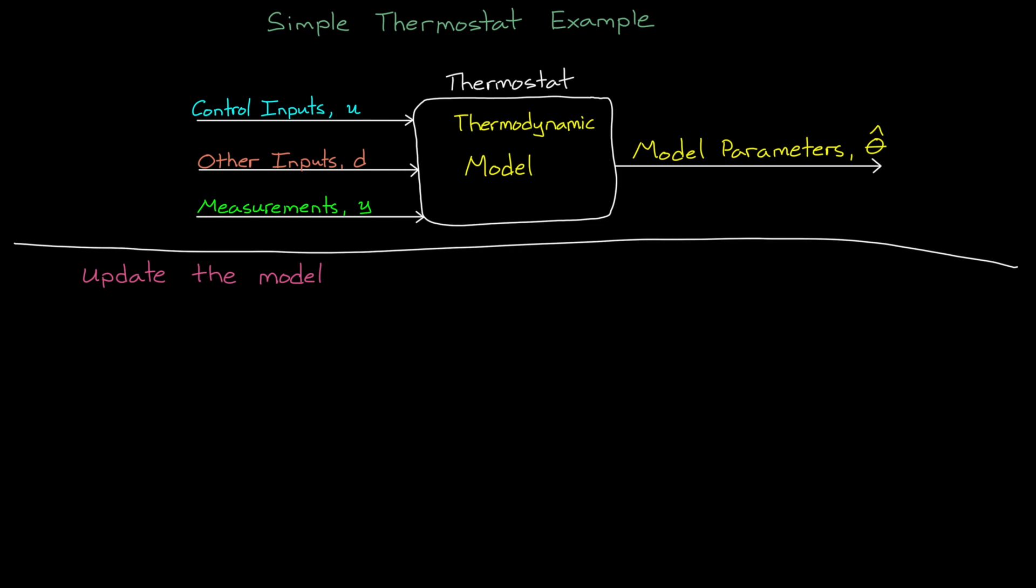It does that by updating the model parameters each time step. And here's one way to do that. The algorithm could take the measured house temperature y and compare it to the predicted house temperature y hat to produce a prediction error. The predicted temperature comes from its internal model, which we'll say is a linear model in the following form.